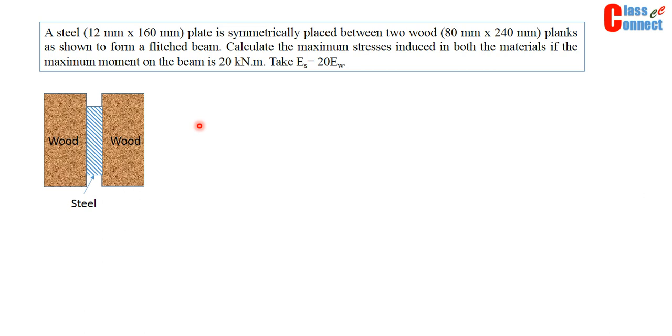So let us first discuss the equivalent section method. Let us convert this steel into wood so that it is all wood section. For that we have to multiply this width of the steel by this modular ratio, that is 20 E_S by E_W.